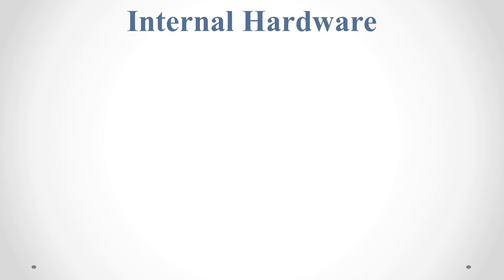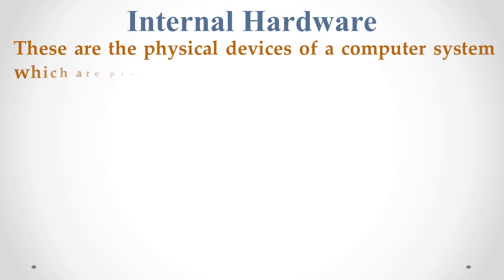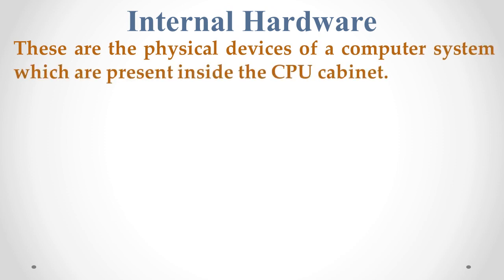As you know, hardware is divided basically into two parts: internal hardware and external hardware. Internal hardware refers to the physical devices of a computer system which are present inside the CPU cabinet.